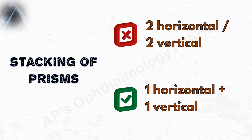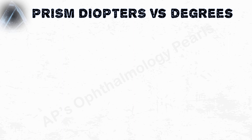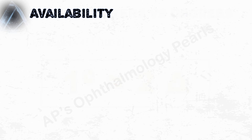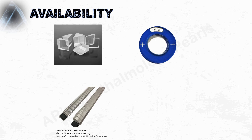Some people denote strabismus in terms of prism diopters and some in degrees — the two are not equivalent. For angles less than 45 degrees, each degree equals approximately two prism diopters. Prisms are available either as loose prisms, in the trial set, in the form of prism bars, or as Fresnel prisms.